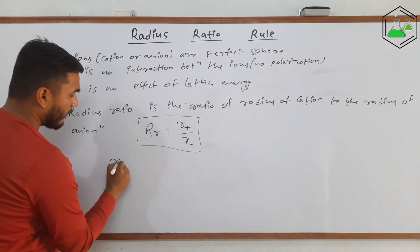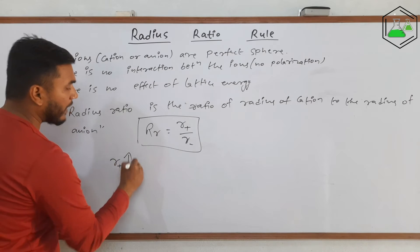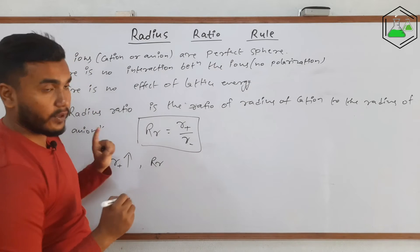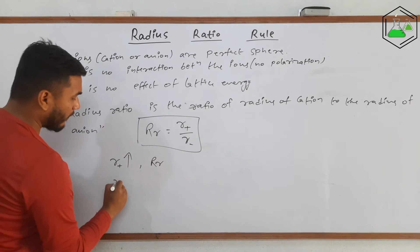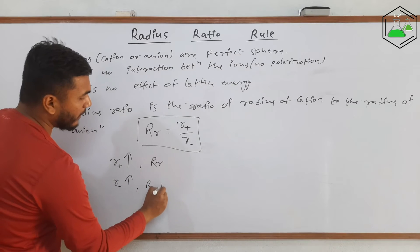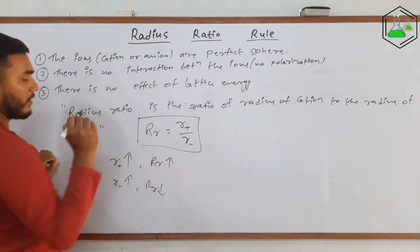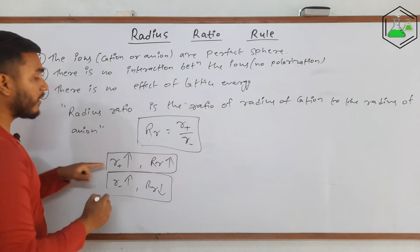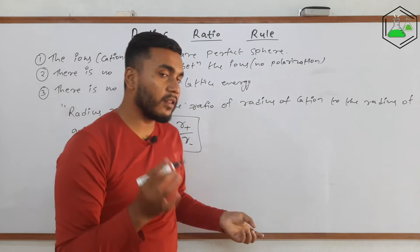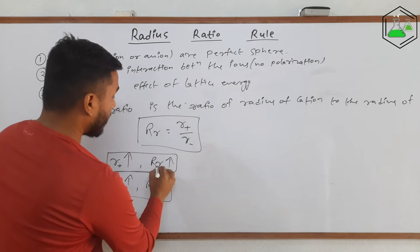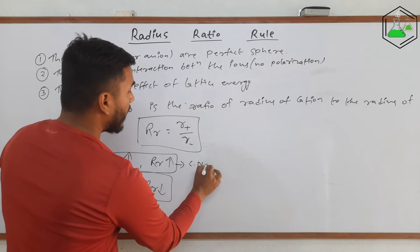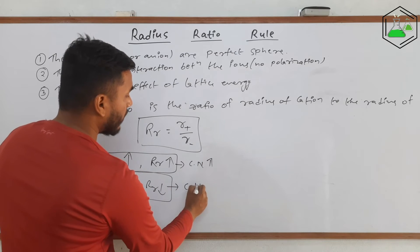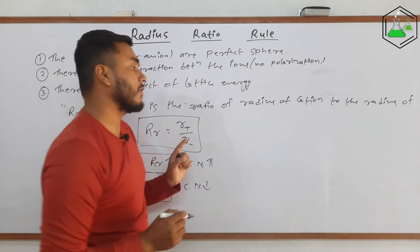If the value of r⁺ — the radius of the cation — increases, then the value of the radius ratio will increase. Similarly, if the value of R⁻ increases, the value of the radius ratio decreases. Most importantly, if the radius ratio value increases, the coordination number also increases. And if the radius ratio decreases, the coordination number will decrease as well — they are directly proportional.